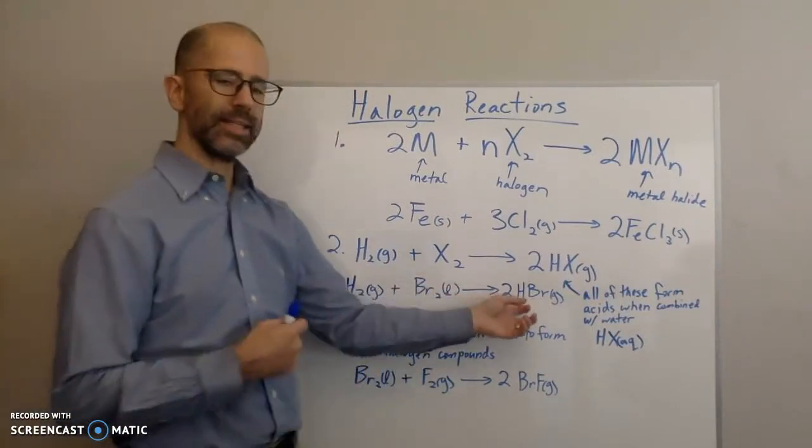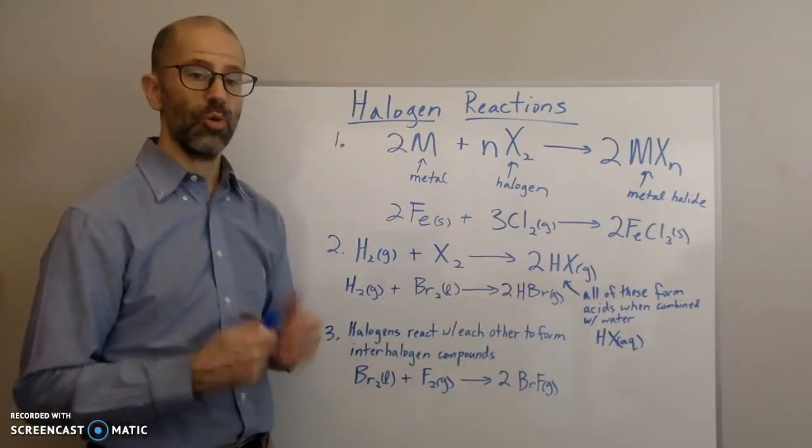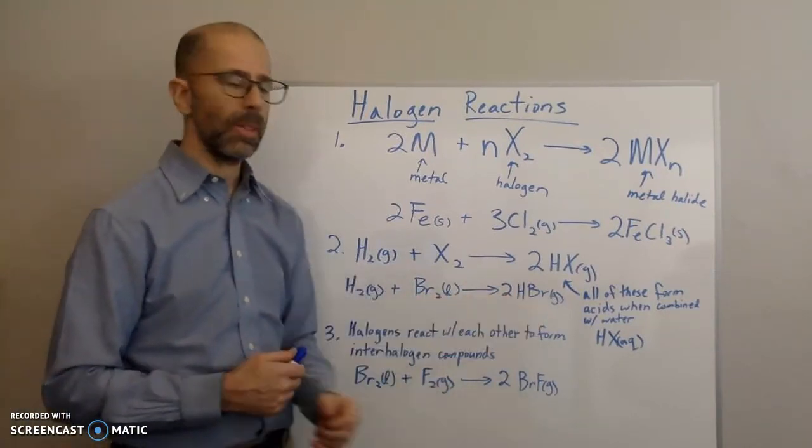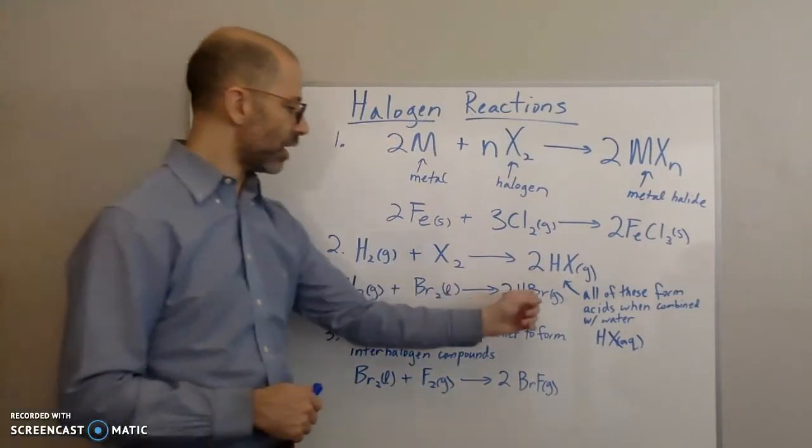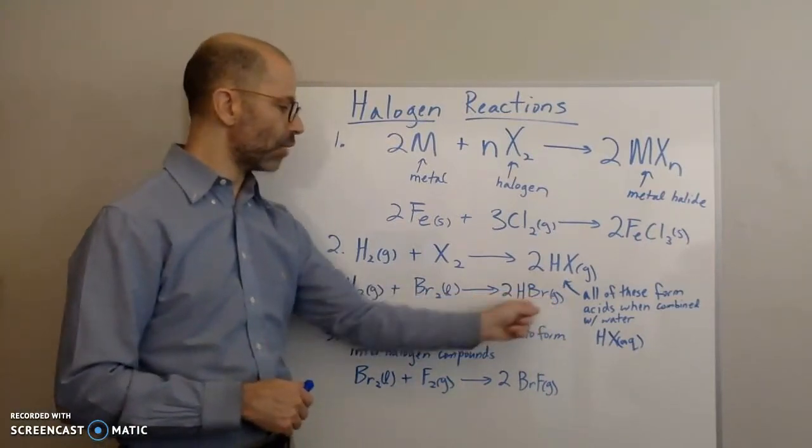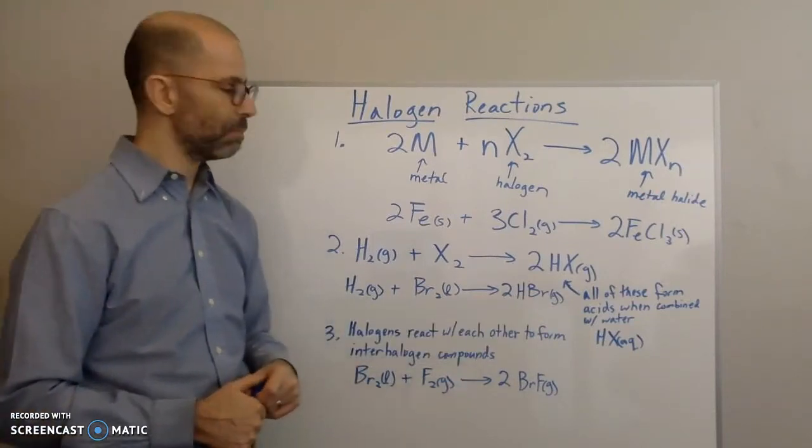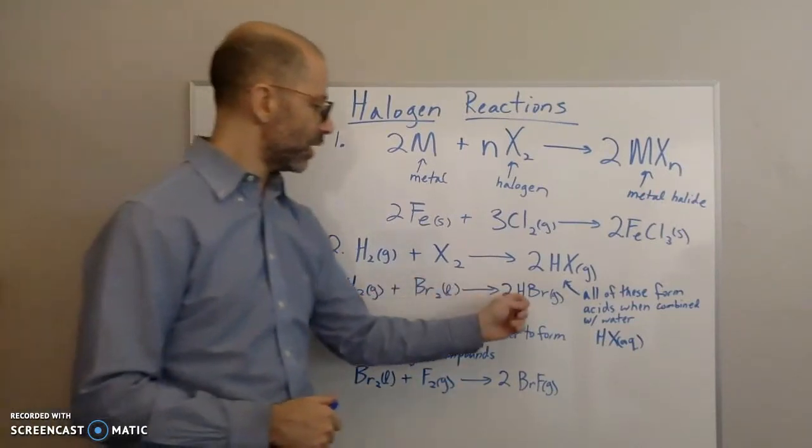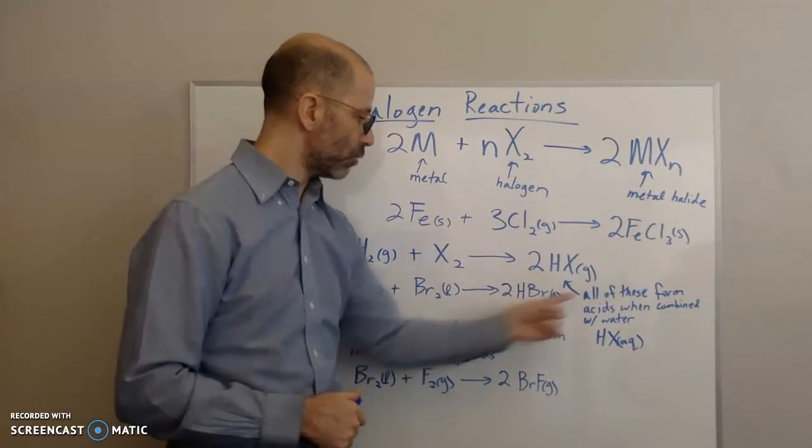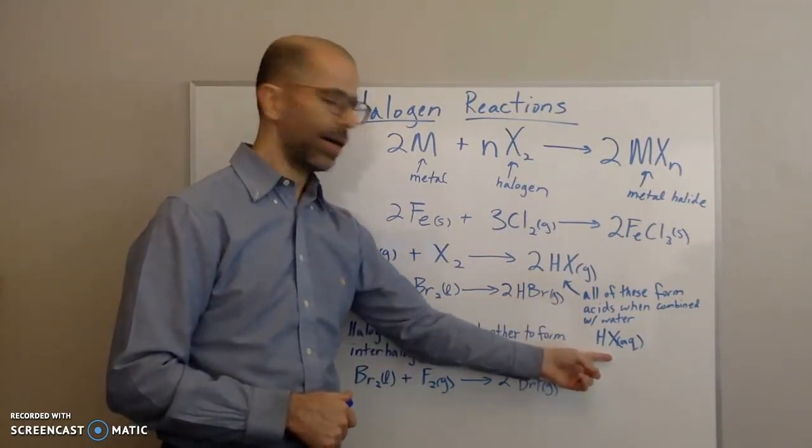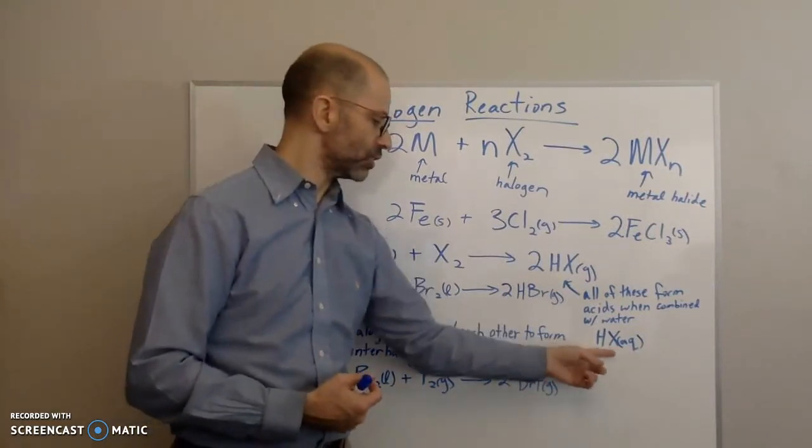Now, HBr gas as a gas is not an acid, so we wouldn't name it as an acid. We would name it as a molecule—hydrogen bromide or hydrogen monobromide. But if you put it in water...